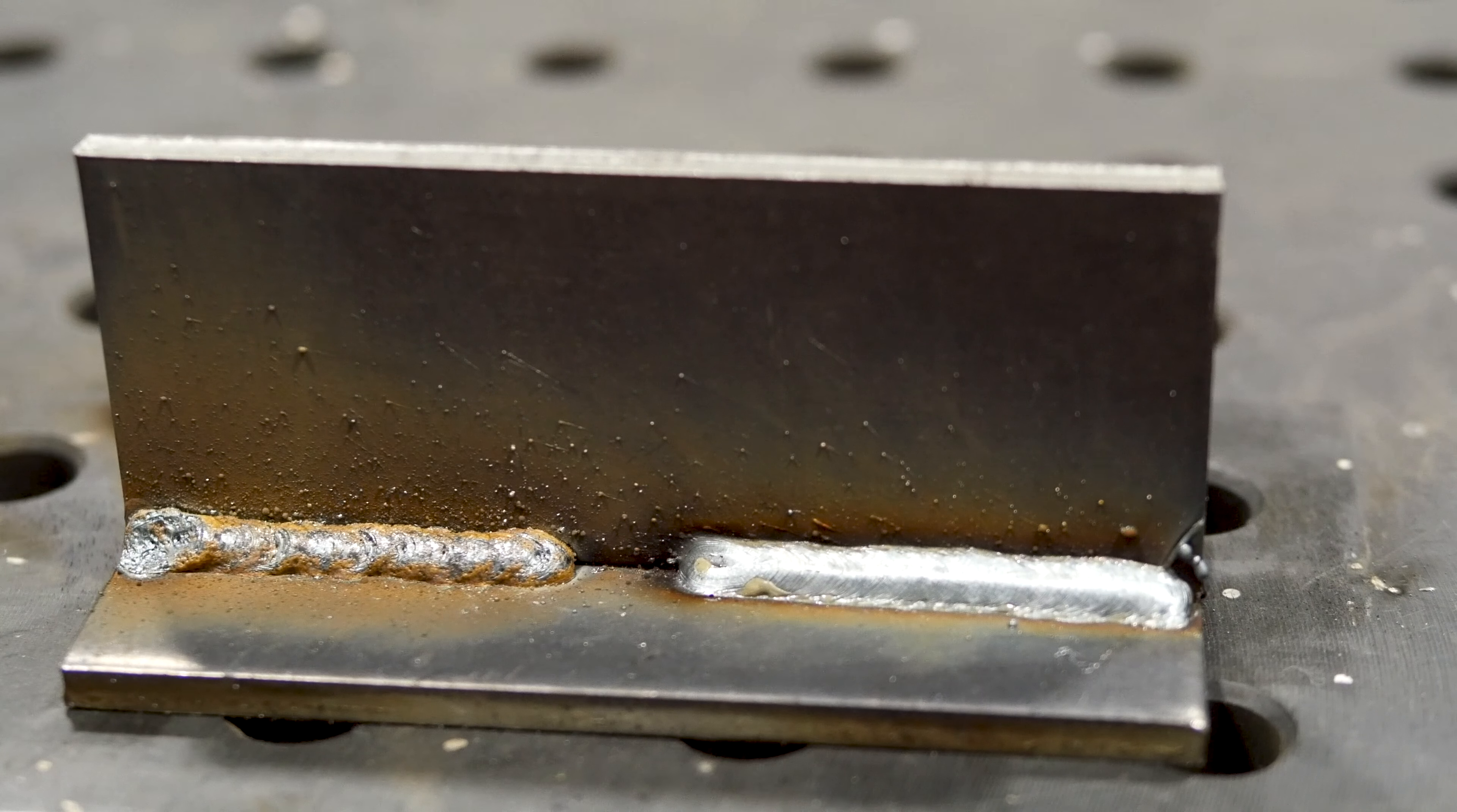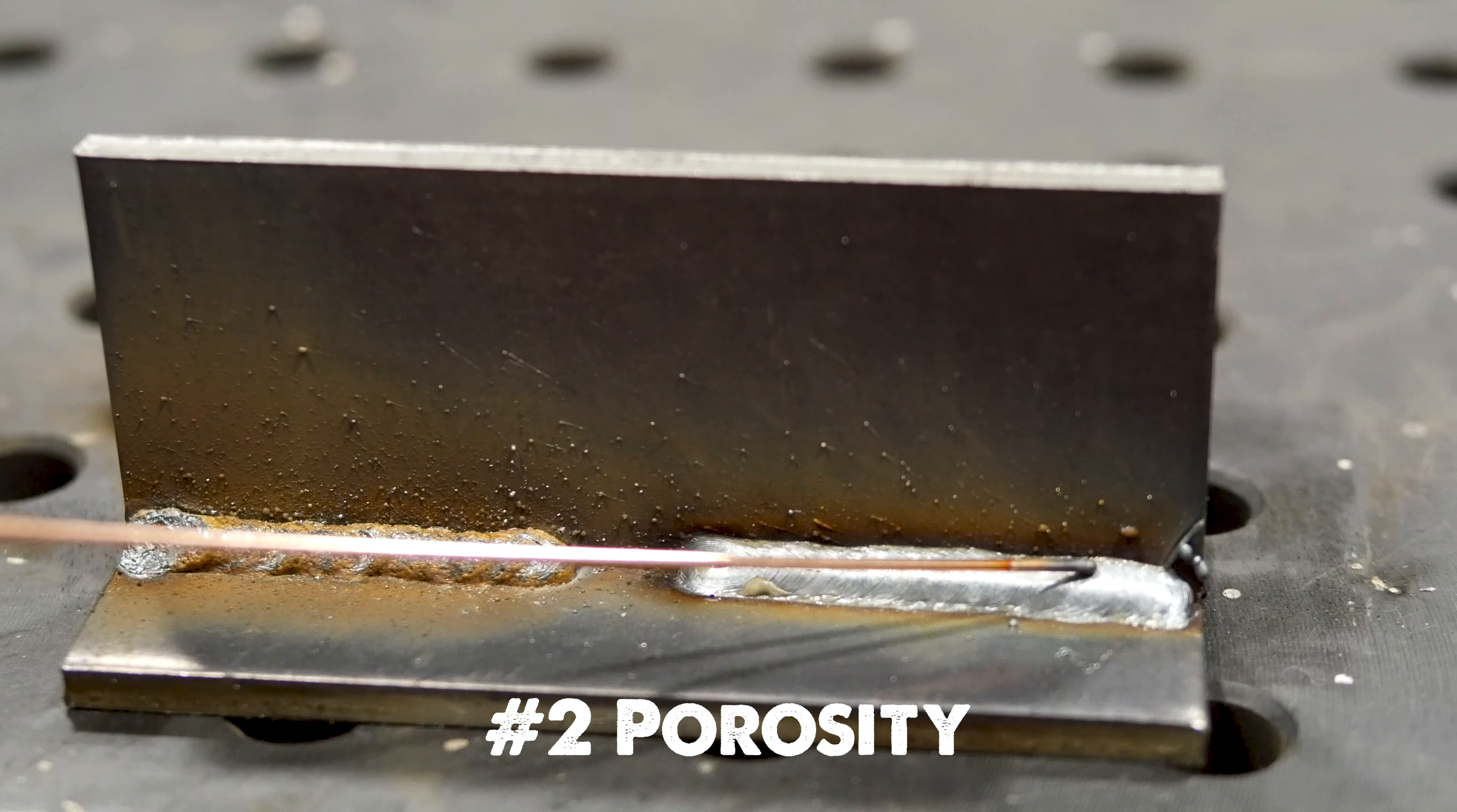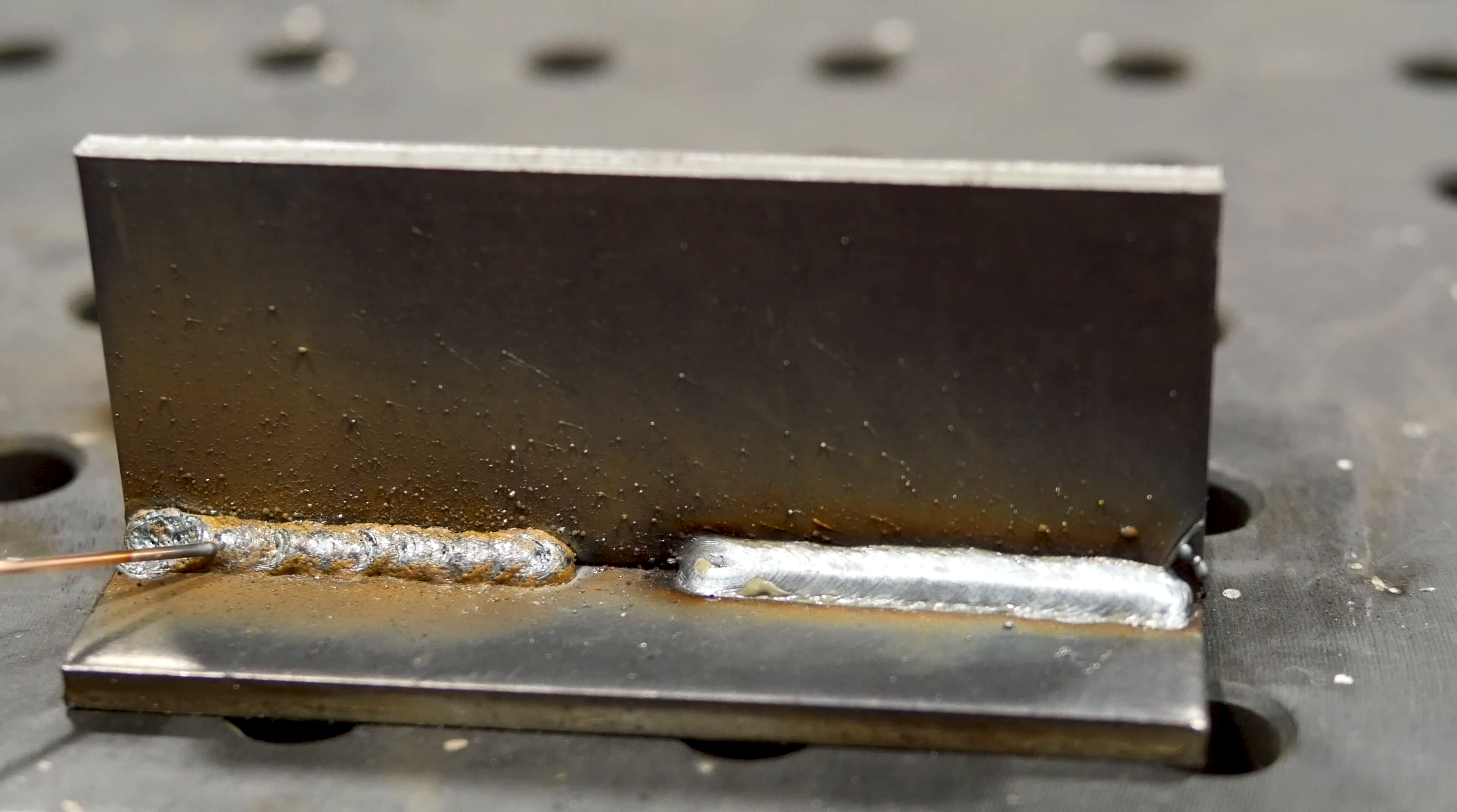The second way to tell if your weld is good is by checking for porosity. The weld on the right has no visible holes on the face. The weld on the left has holes throughout the entire length of the weld.